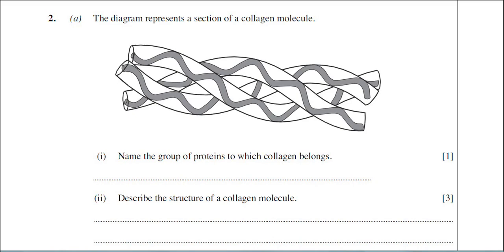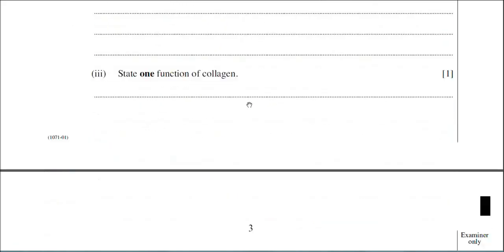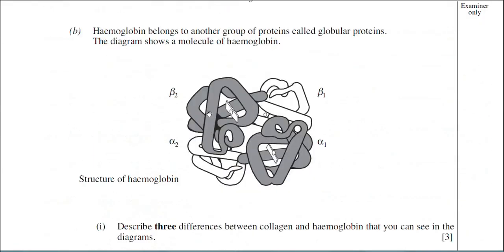These two proteins make good comparisons with regard to their structure and indeed their function, because the structure of proteins ultimately dictates the functioning of the protein. To start off with, we've got a diagram here of a collagen molecule. I'll just scroll down a little bit to show you that later on there is a diagram of the haemoglobin molecule. So the question starts to look at comparisons between haemoglobin and collagen.